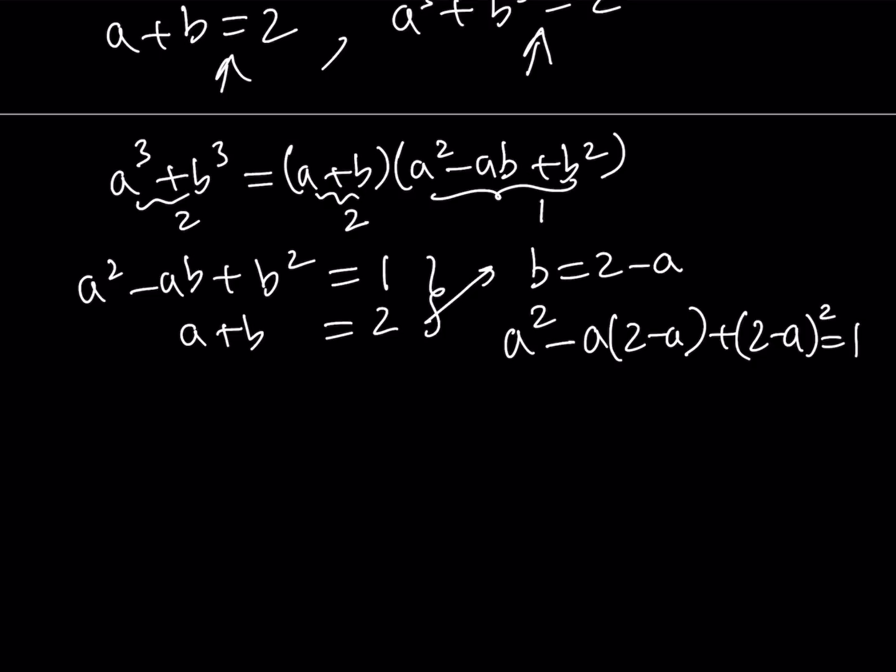Since it's in a single variable, we can solve it. This gives us A² minus 2A plus A² plus 4 minus 4A plus A² equals 1. And if you add them all up, you get 3A² minus 6A plus 3 equals 0 or 3 times (A minus 1)².